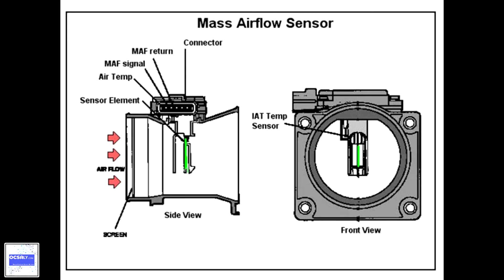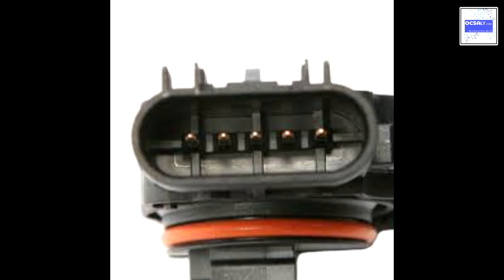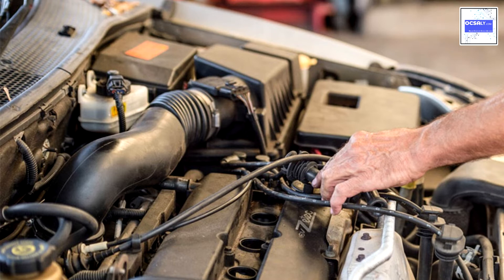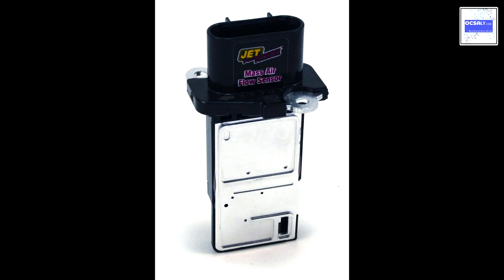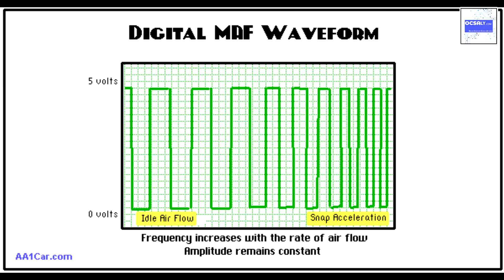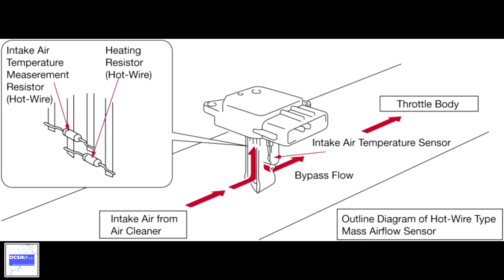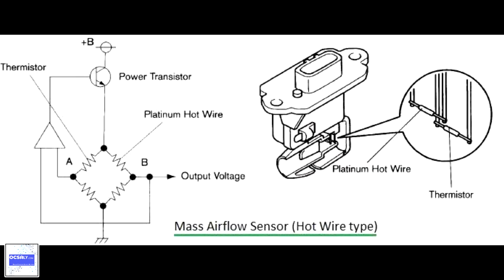Both sensor designs output a 0.0 to 5.0 volt or a pulse width modulation, PWM, signal that is proportional to the air mass flow rate, and both sensors have an intake air temperature, IAT, sensor incorporated into their housings for most post on-board diagnostics, OBD2, vehicles. Vehicles prior to 1996 could have MAF without an IAT; an example is the 1994 Infiniti Q45.